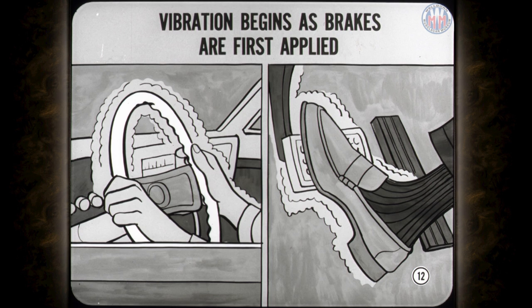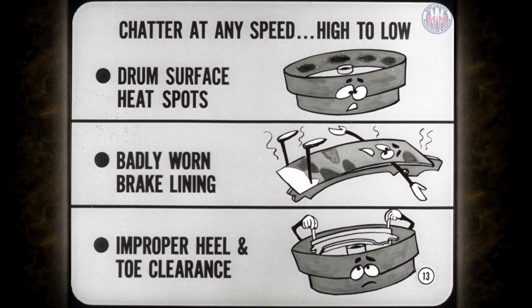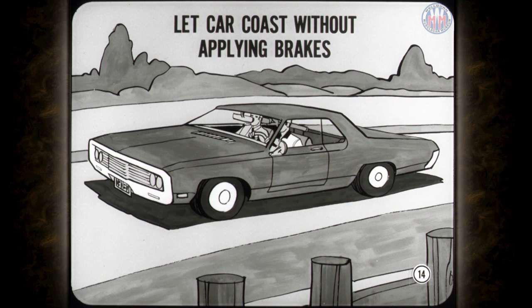If vibration begins as the brakes are first applied but lets up or disappears at lower speeds, the cause is probably a drum surface which is wavy, oval, or out of round. In some cars, you may also hear a rumbling sound along with the vibration, especially with heavier pedal force. Chatter which comes in at any speed, from high to as low as 20 miles an hour, is usually caused by heat-spotted drum surfaces. Other causes can be badly worn brake lining or new lining with improper heel and toe clearance. After you check the brakes, bring the car back up to the original test speed and let it coast down through the critical range without applying the brakes. Any vibration under these conditions comes from other parts of the car or from the pavement.